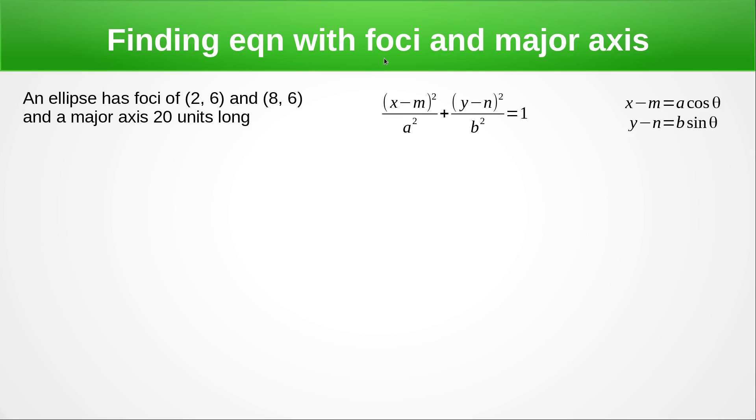Okay so let's find an equation where we're given the foci and the major axes. So the major axis here is 20 and these are the foci. The centre is halfway between these so obviously it's still going to be on the line 6 but halfway between 2 and 8 is 5. So 5 and 6 that gives us our M and N value. Now we've got that C is 3 because that's going to be the distance from the centre to the foci. And we also have that A equals 10. A is half the major axes and later on we'll see that B is half the minor axes.